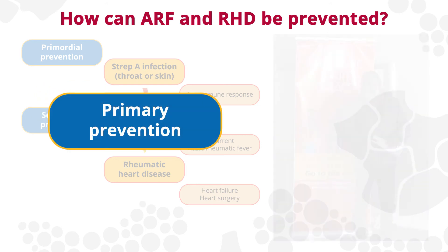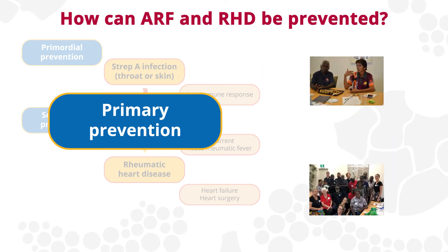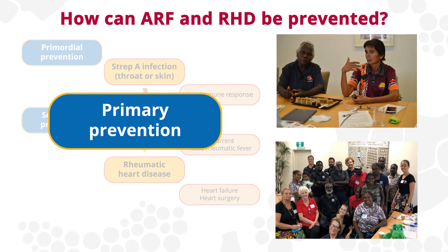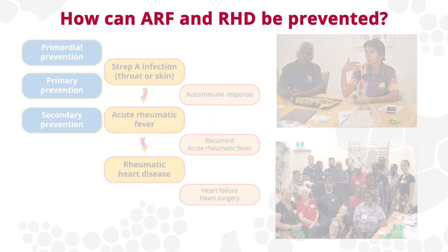Primary prevention aims to stop the development of acute rheumatic fever following a strep A infection. Aboriginal and Torres Strait Islander health staff are well placed to identify and treat skin sores and sore throats in people who are at high risk of acute rheumatic fever.